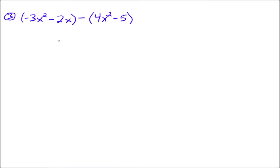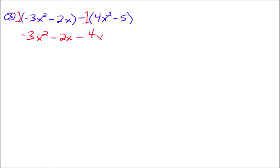Here we're subtracting two polynomials. There's really a negative 1 out in front of the second polynomial, 4x squared minus 5, and a positive 1 out in front of the first. When we distribute the 1 through, it just leaves us with negative 3x squared minus 2x — the first polynomial doesn't change, you just get rid of the parentheses. But it's the second polynomial where we've got a bit of a dilemma — we really need to distribute this negative 1 through the polynomial. Otherwise it's too easy to make a sign error.